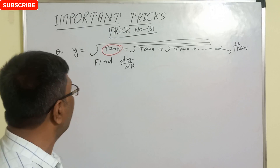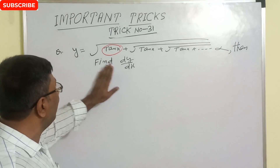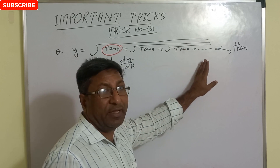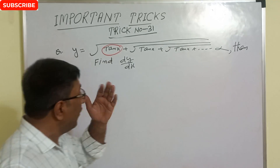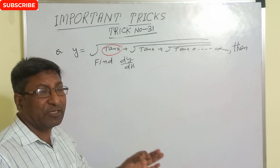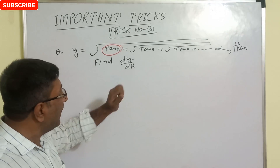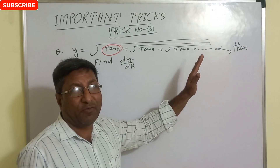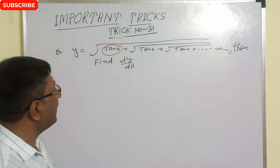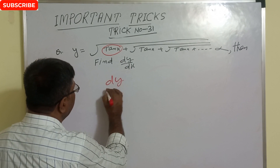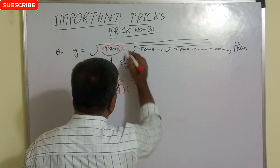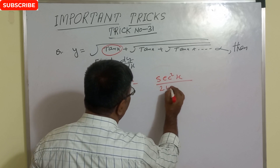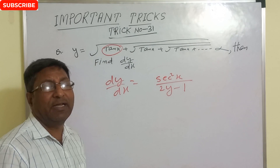Find dy/dx when y equals root of (10x plus root of (10x plus root of 10x)) up to infinity. For this type of question, there is a very simple technique: when the same function is repeated any number of times up to infinity, we can use directly dy/dx equals derivative of the given function — derivative of 10x is 10 — divided by (2y minus 1). This is the right answer.